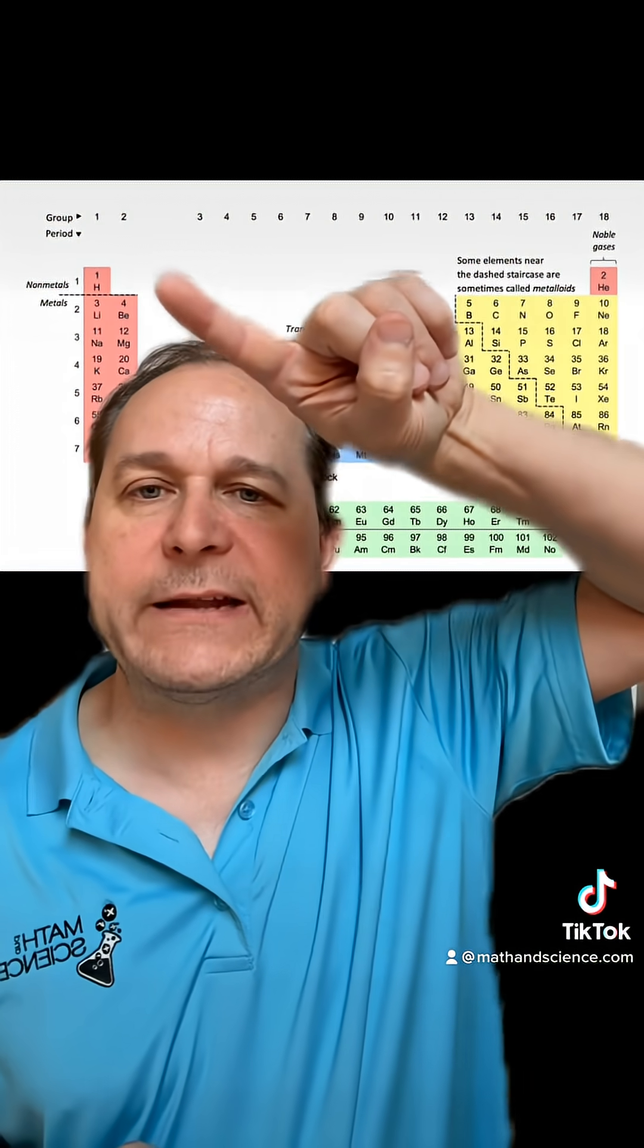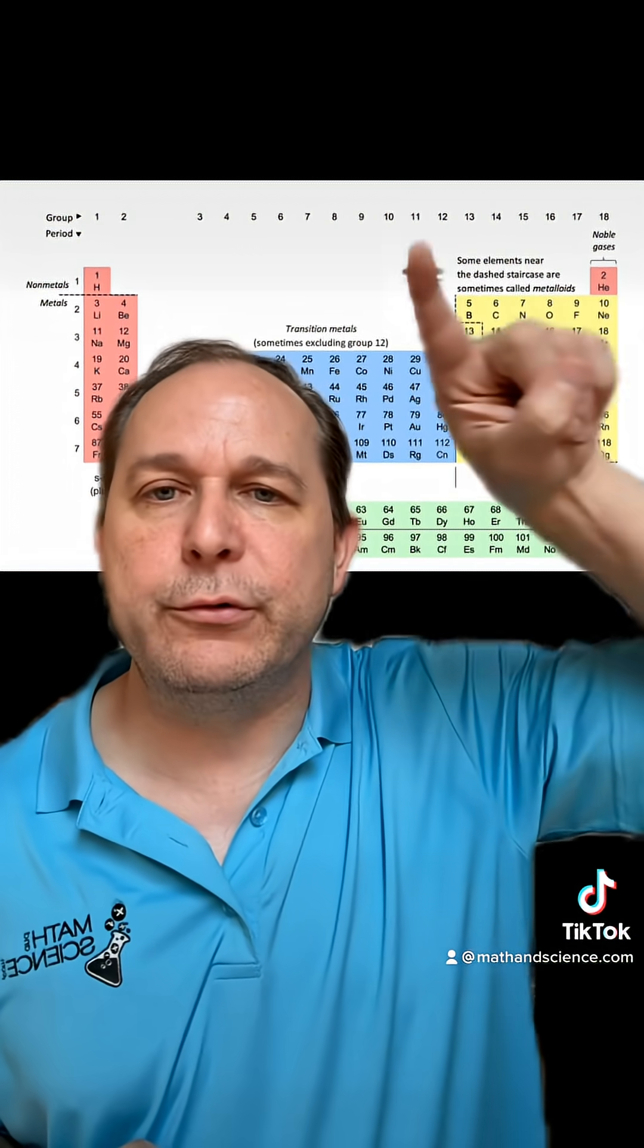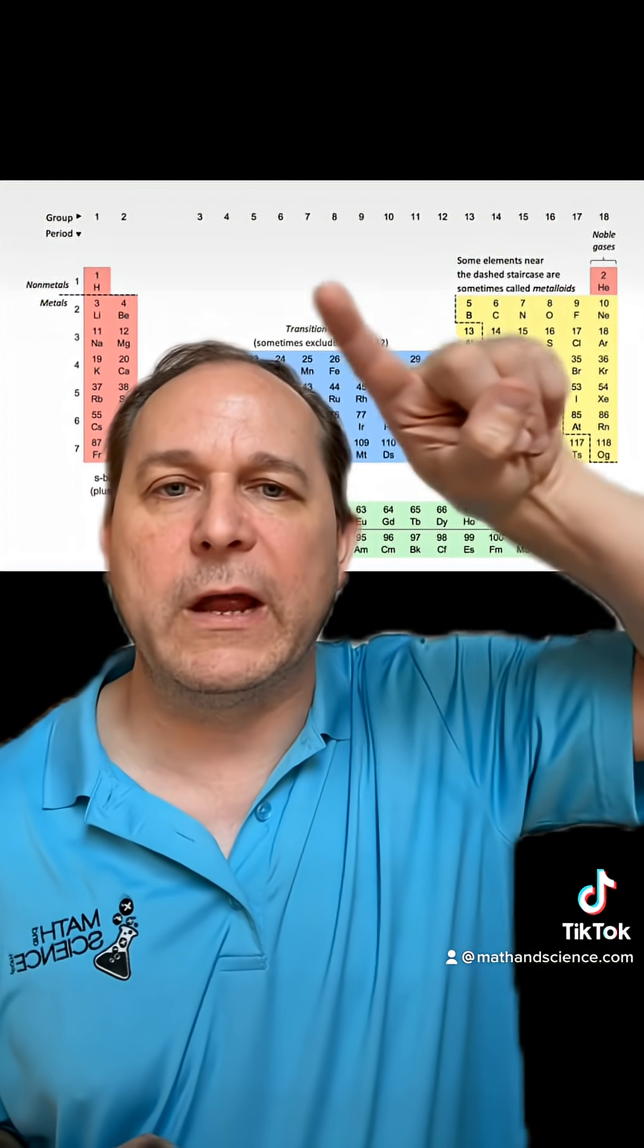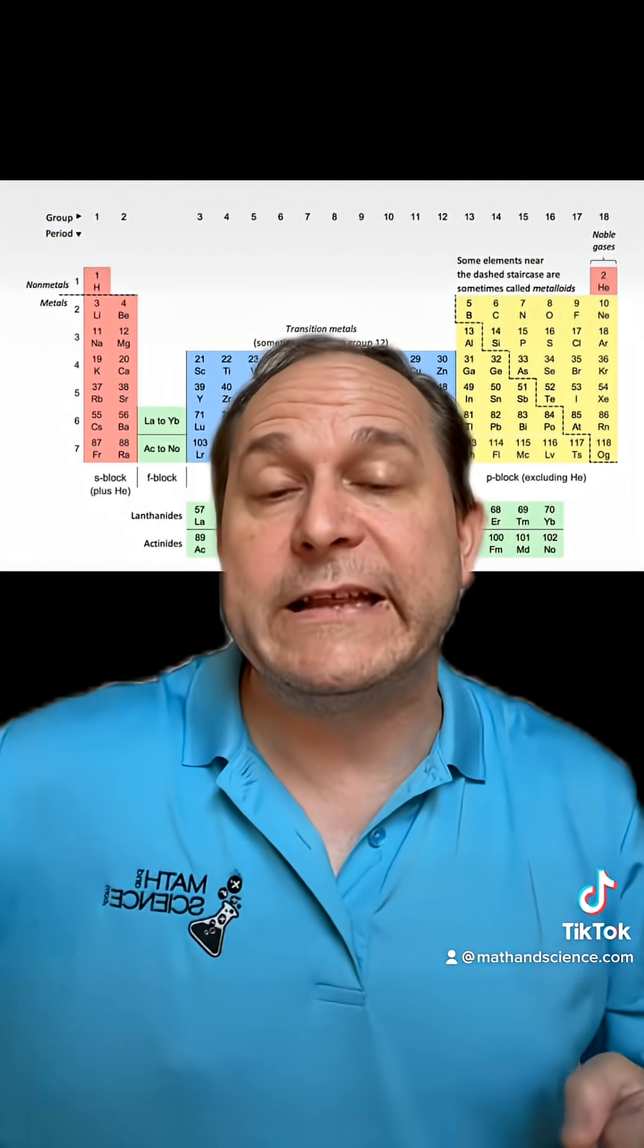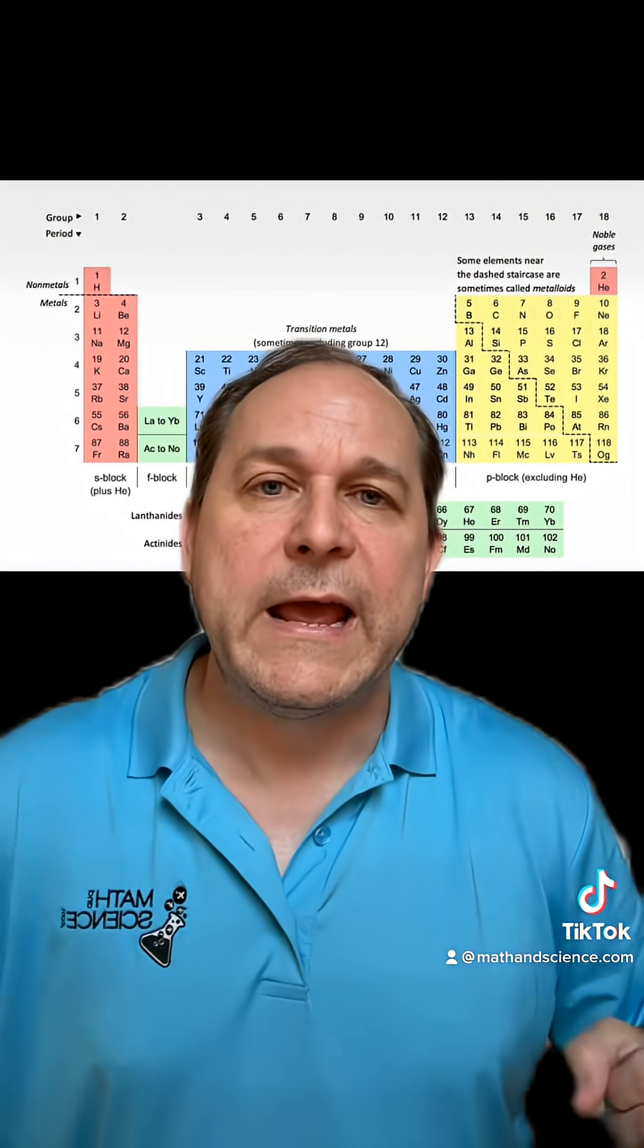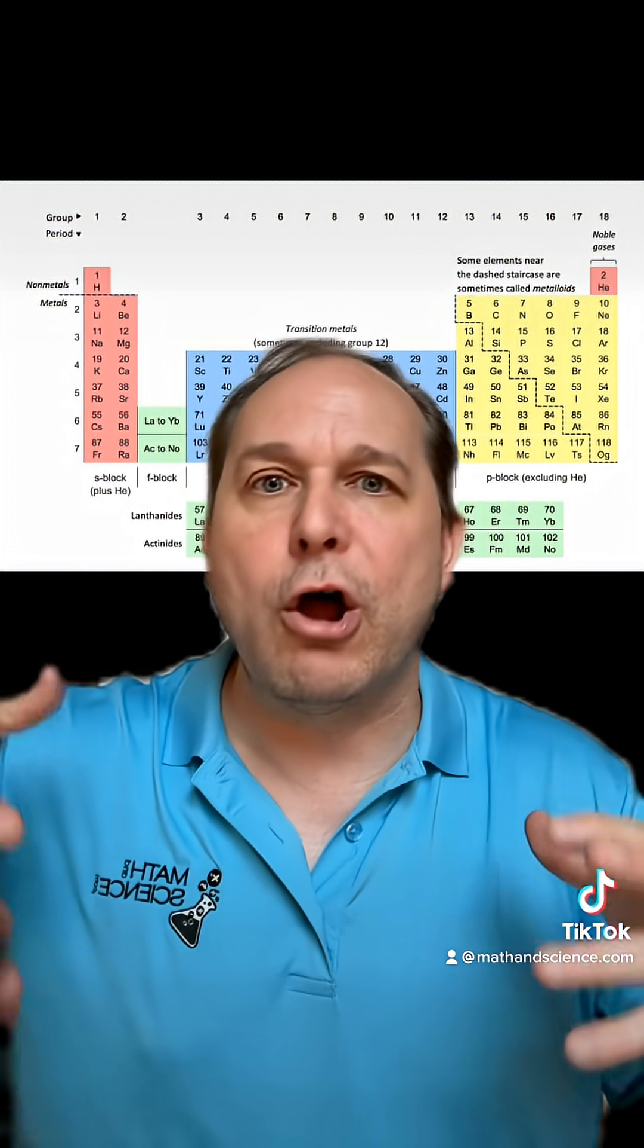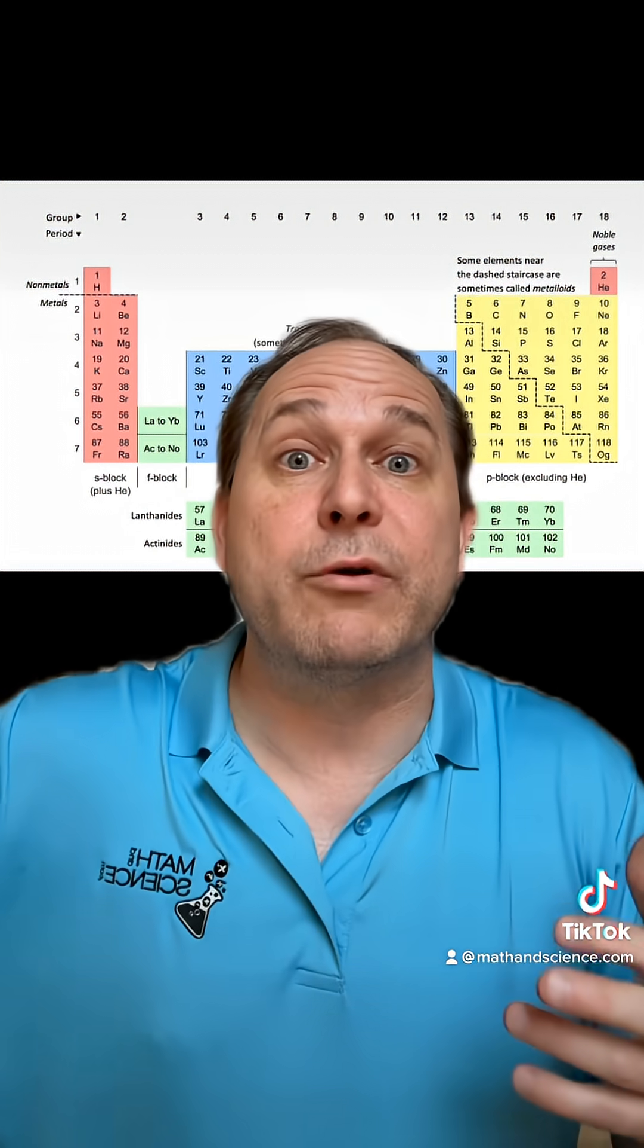Now as you walk across the periodic table—element one, element two, element three, element four, element five, six, seven, eight, and so on—what you're doing is incrementing the number of protons in the nucleus. And to keep everything balanced, you're also incrementing the number of electrons.